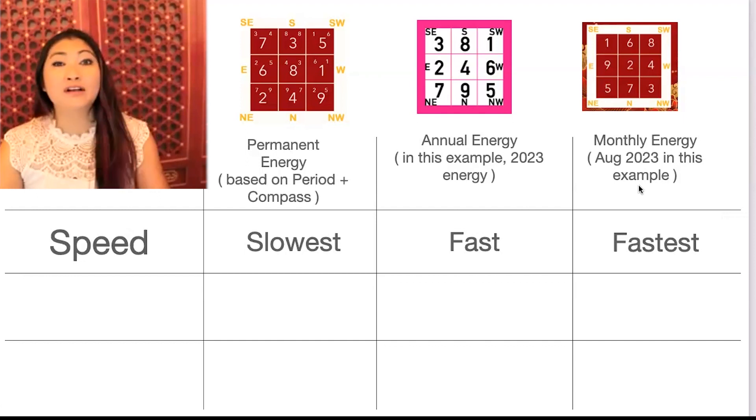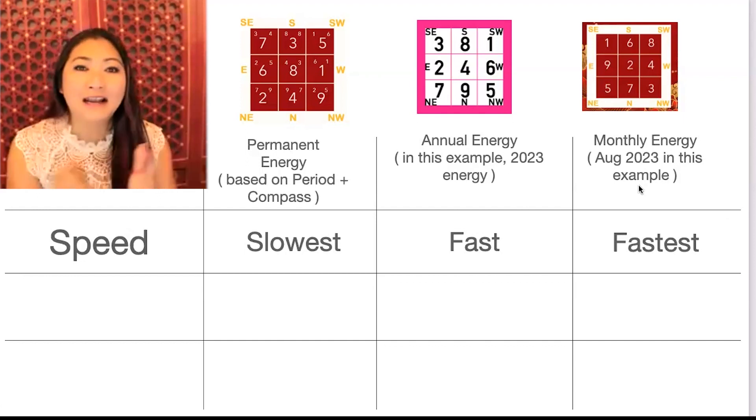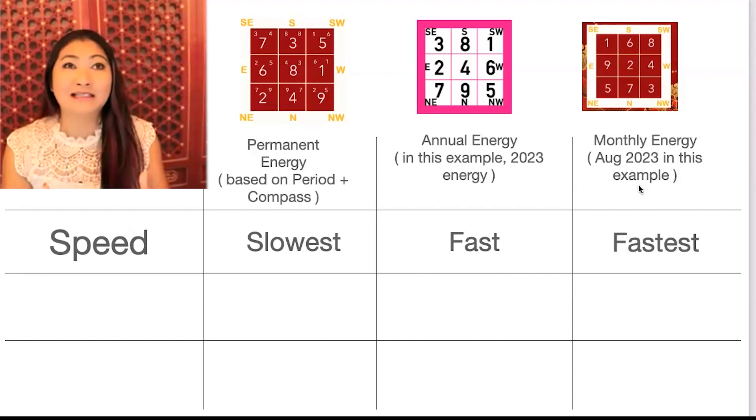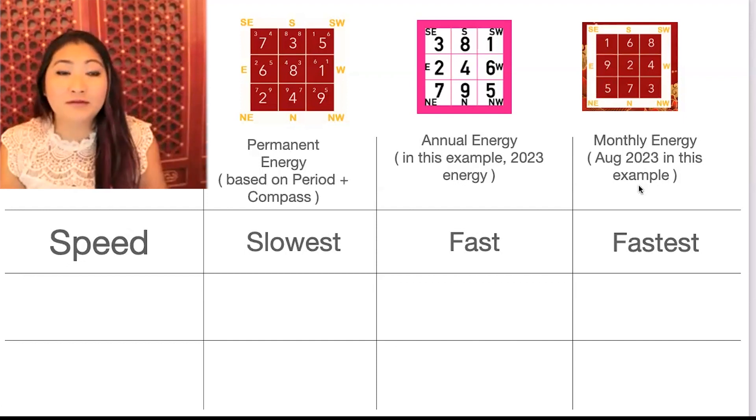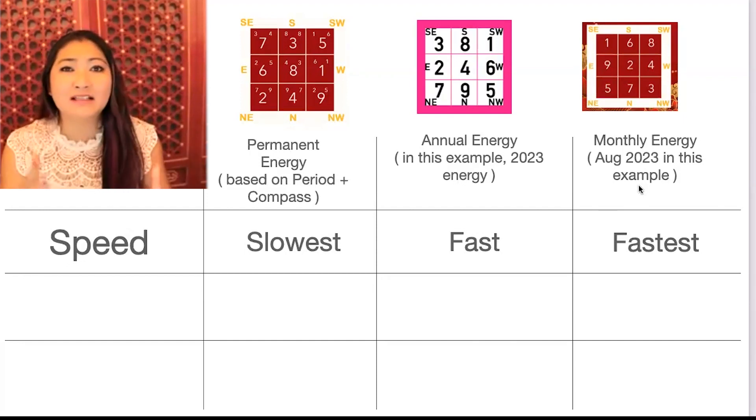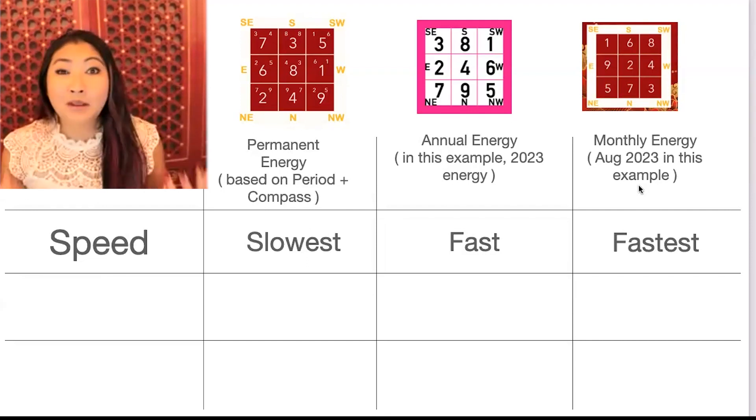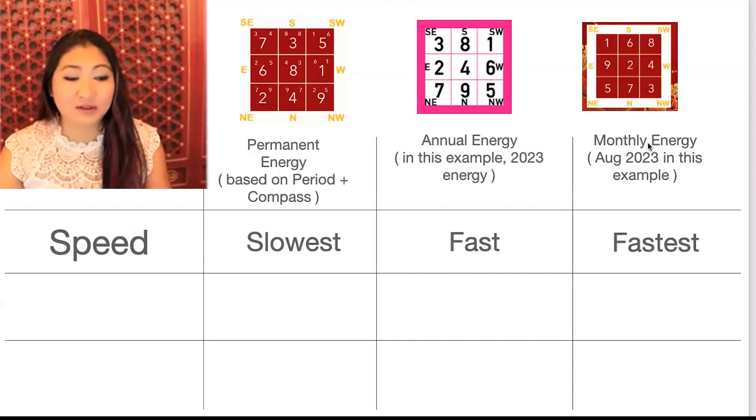The monthly energy, however, works the fastest. So if you want a financial boost for a specific month, or if you have a business and you want to do a specific launch, you can look at the energy of your headquarters, for example. What works the best? Which month is the most auspicious, the most prosperous? You can do your business launch, for instance, during that month, because that is the fastest one.